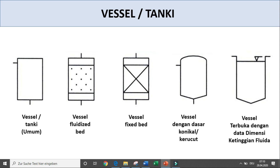Saya mulai pada katalog-katalog yang digunakan pada standar ini. Yang pertama, misalkan contohnya adalah vessel atau tangki. Beberapa contoh vessel yang ada — standar simbol dari vessel adalah seperti ini. Tergantung nanti apakah ada fluidized bed atau fixed bed, atau dengan dasar yang berbeda — conical atau bulat — dan sebagainya, terbuka atau tertutup.